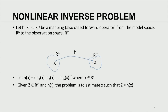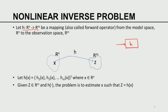Let H be a map — that means H is a vector valued function of a vector. X is a vector in Rn that maps into Rm. H of X, which comes out, belongs to Rm. So you can see this is a vector valued function of a vector. It is also called a map. In meteorological context, it is also called a forward operator — a map from the model space Rn to the observation space Rm.